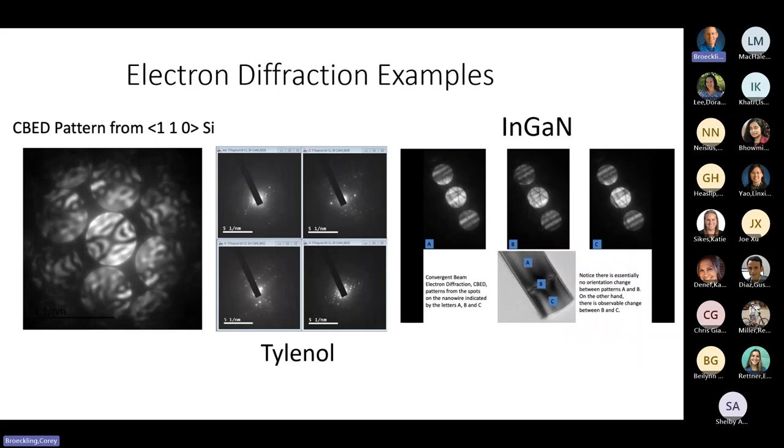Then we have diffraction. We can do CBED, convergent beam electron diffraction. The nice thing about that is it shows you symmetry. You see you have two two-fold axes. It shows you the symmetry of the 110, which is what you expect. So you can actually see symmetry in a structure. It's used quite a bit to sort out the structure of crystals.